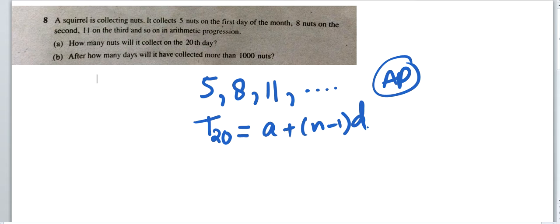What is 'a' here? The value of a is 5. What about d, the difference between two terms? That will be 8 minus 5, which is 3. So d is 3, and n is 20 since we want the 20th term.